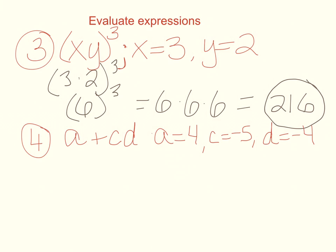Finally, on our last example here on this page, we have a plus cd. Again, we're going to substitute the values: 4 plus -5 times -4. I put parentheses around the numbers I multiply together. PEMDAS, we have to do multiplication first. We have to do this portion. -5 times -4, that is going to be a positive 20. Drop the 4 down. 4 plus 20 is 24.